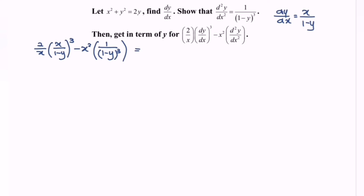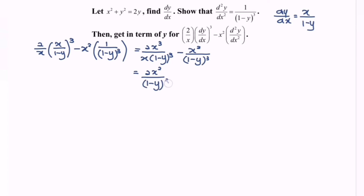Expanding the situation: 2x cubed over x times (1 minus y) to the power of 3, minus x squared over (1 minus y) to the power of 3. Since they share the same denominator, we can combine them: 2x squared minus x squared over (1 minus y) to the power of 3. After simplifying, we have x squared over (1 minus y) to the power of 3.